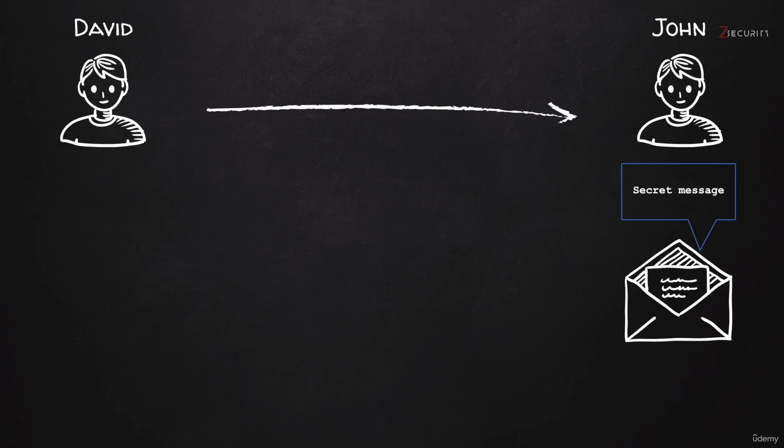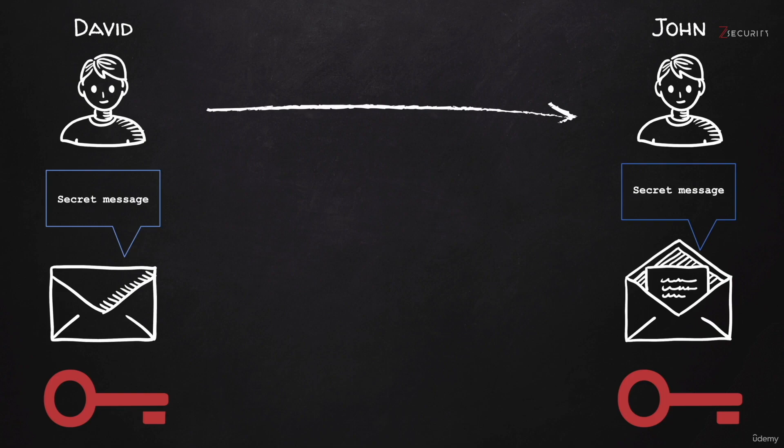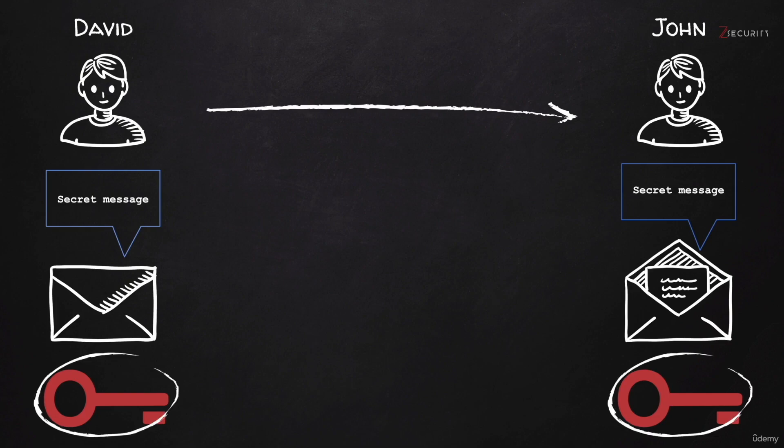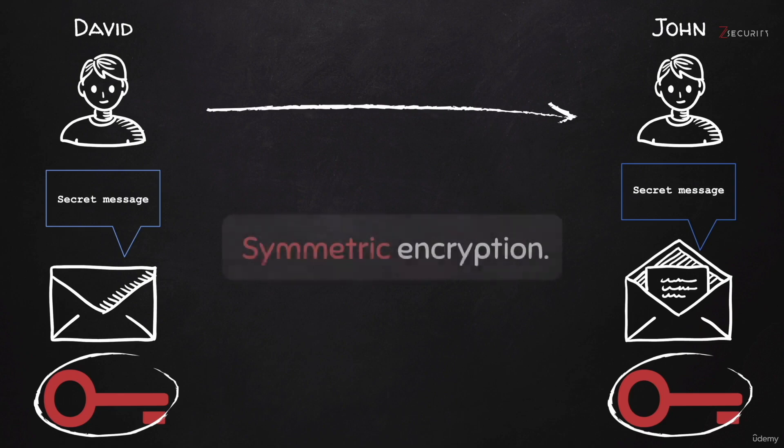Basically, David uses a key to encrypt the message, John uses the same key to decrypt it, and this way they're both able to read the message, but anybody who does not have the key will not be able to read it. The same key is used by both David and John — therefore, this is known as symmetric encryption.